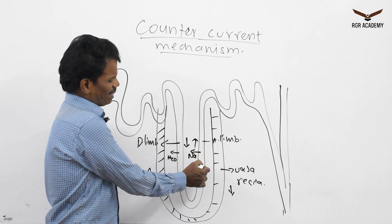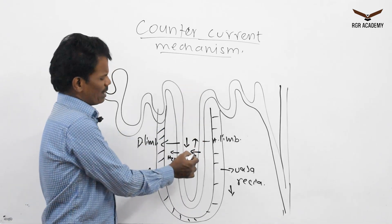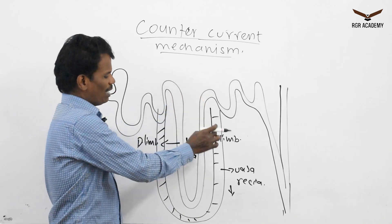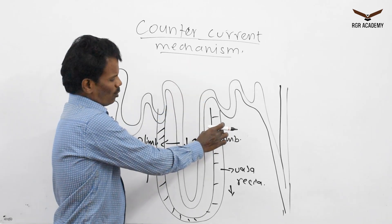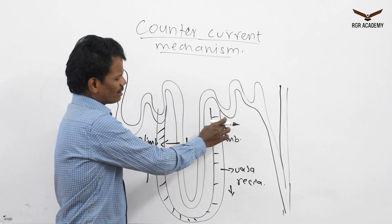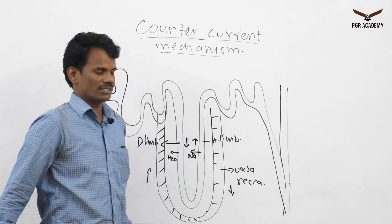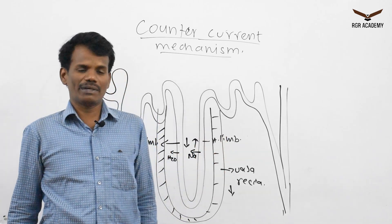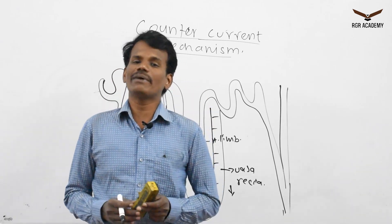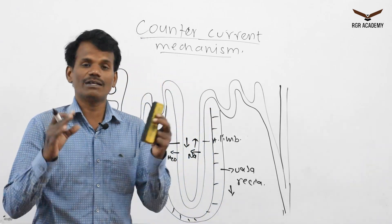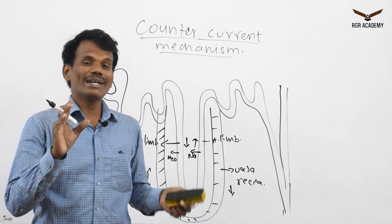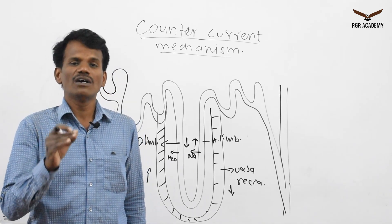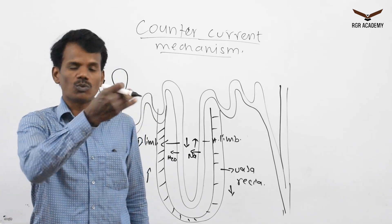In the ascending limb, the glomerular filtrate moves upward, and in the vasa recta the blood is flowing downwards — these two are also in counter current mechanism. This counter current mechanism is very much helpful for urine concentration and the flow of salts outside.